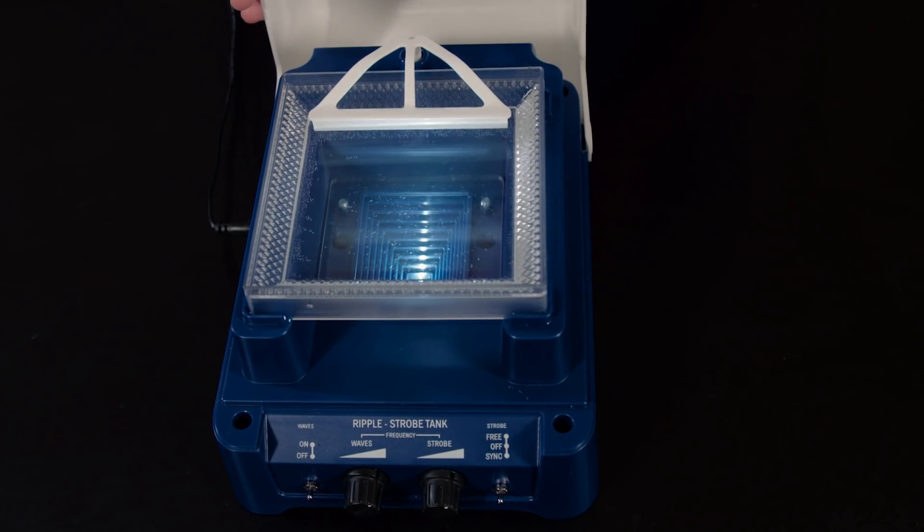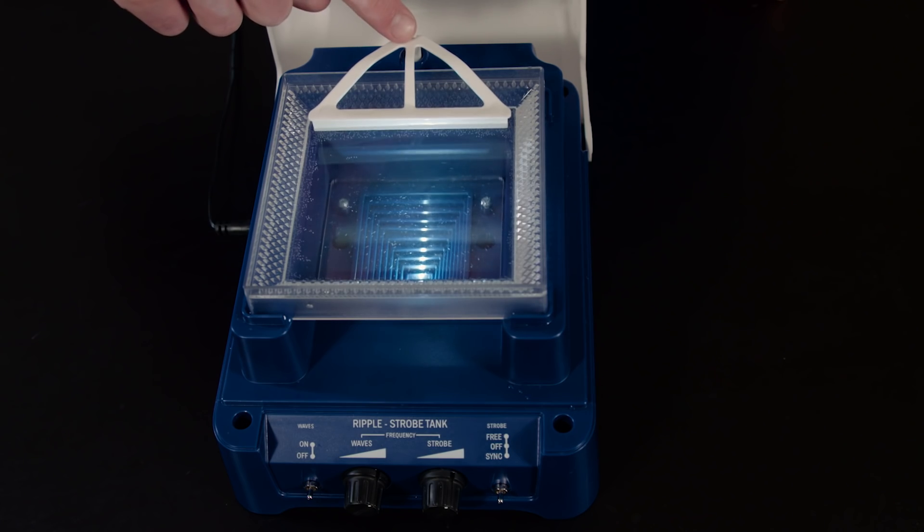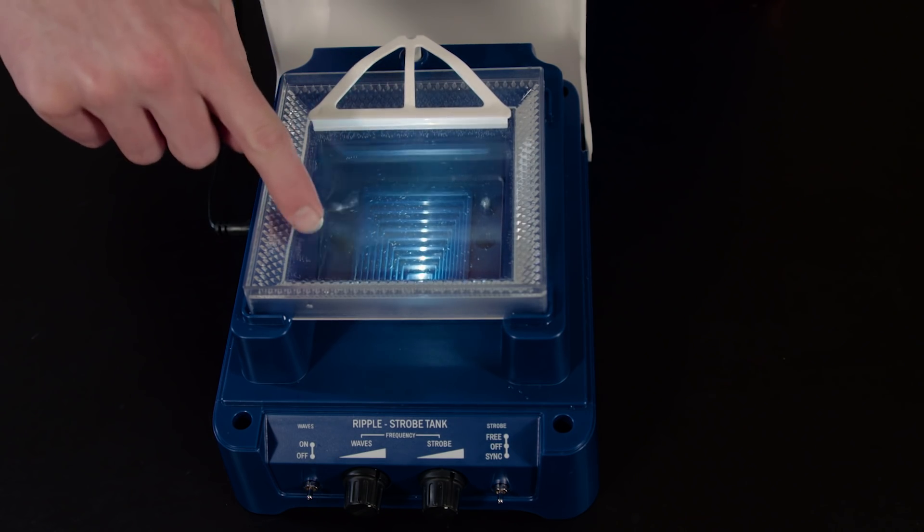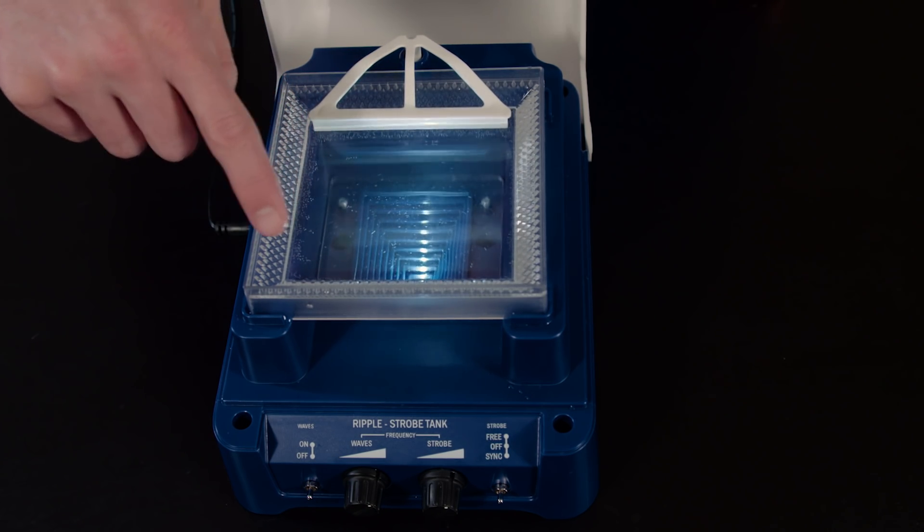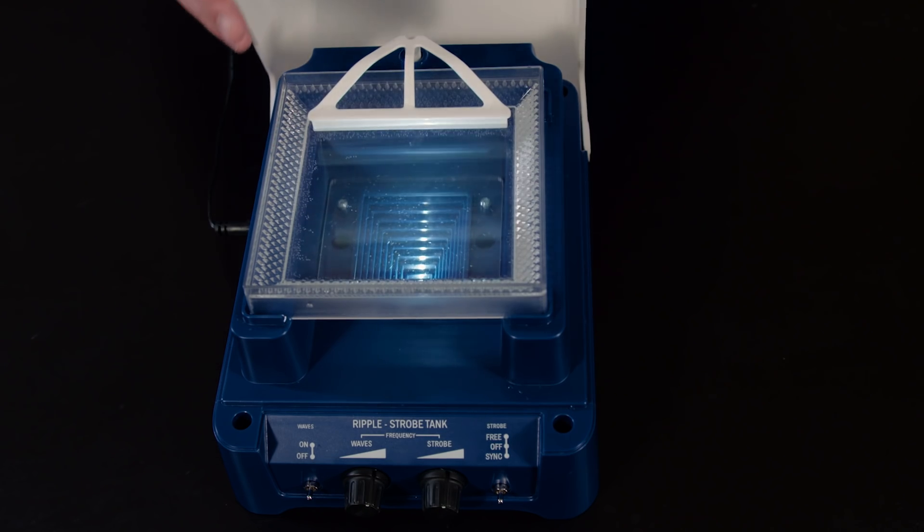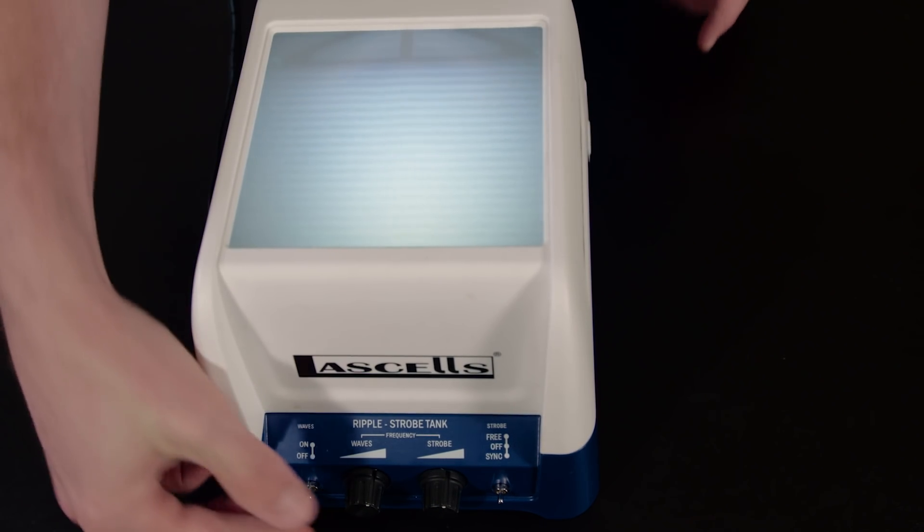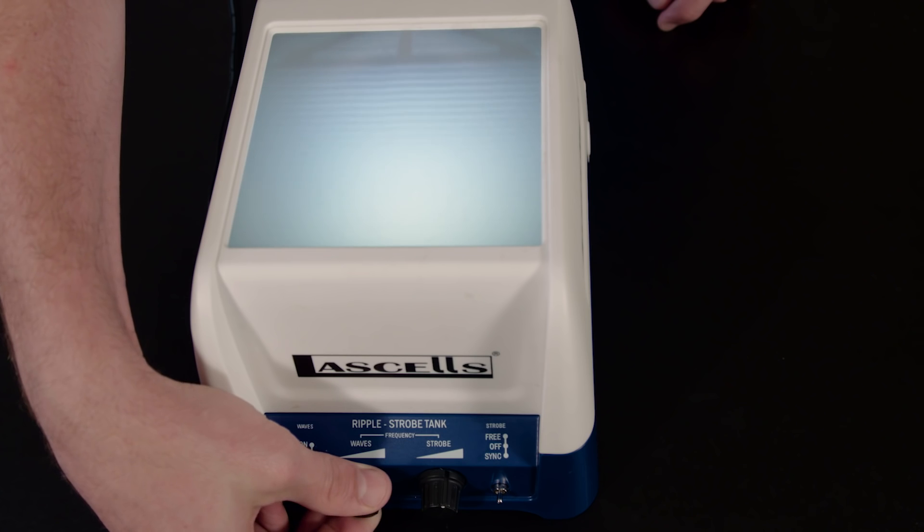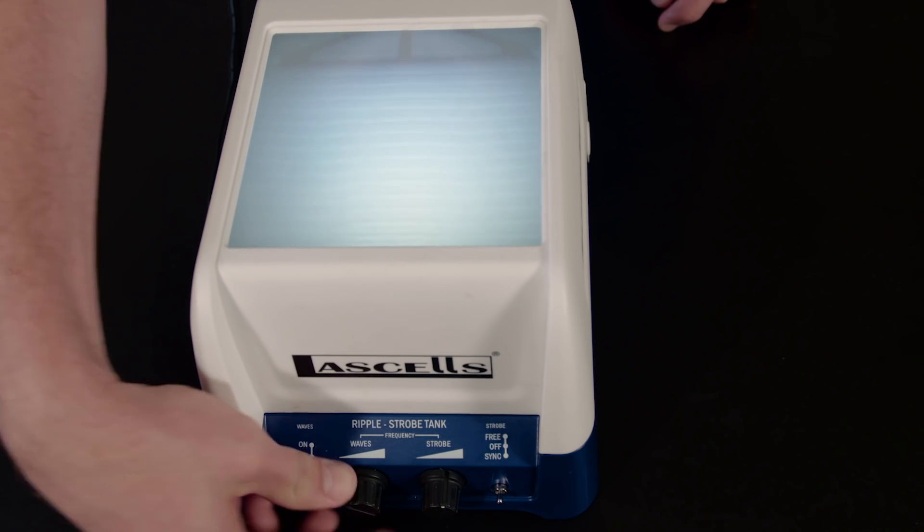The screen flips up to reveal the wave mechanism, a small tank with baffled edges that reduces wave reflection. The water is poured to about half the height. The vibration is controlled by these dials which manipulate the wave frequency and the strobe frequency.